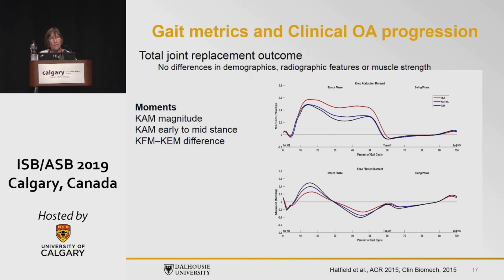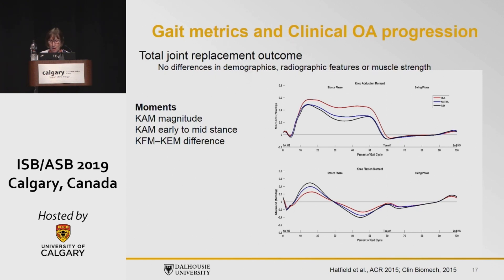What was different was the overall knee adduction moment magnitude — the red curve represents the group that went on to total joint arthroplasty, the blue group did not, and the black group is asymptomatic. There is a slight change in early to mid-stance peak for the knee adduction moment. Also, the knee flexion moment early stance to knee extension moment late stance difference was less in the individuals that went on to total joint arthroplasty — they had what we refer to as a stiffer gait pattern.